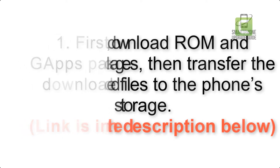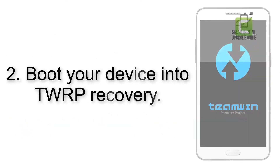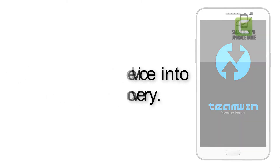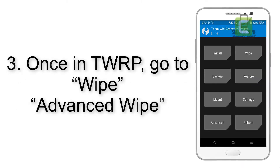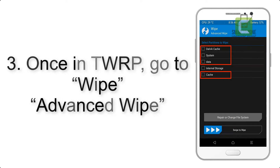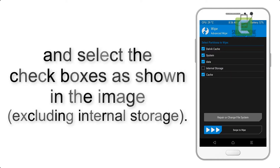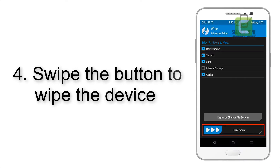Step 2: Boot your device into TWRP recovery. Once in TWRP, click on Wipe, then Advanced Wipe, and select the checkboxes as shown in the image, excluding internal storage.